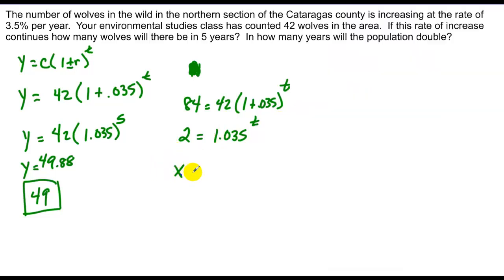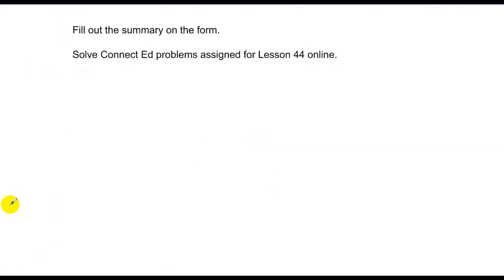So x equals 20.15 years. Those are all our examples for today. Fill out your lesson summary and do your ConnectED.